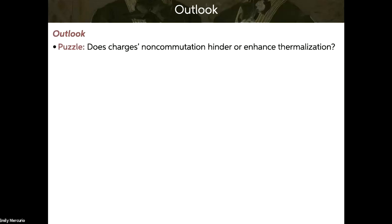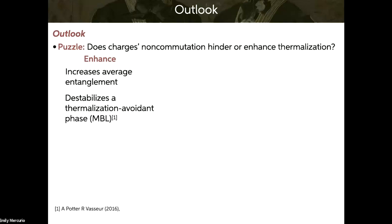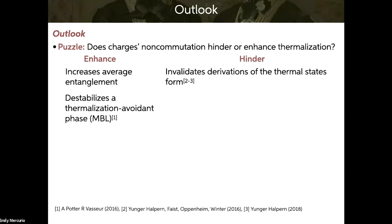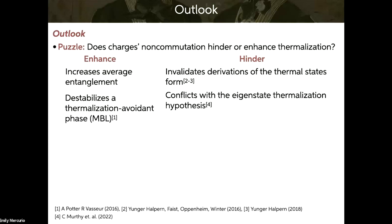The outlook. This work raises a conceptual puzzle: does charges' non-commutation hinder or enhance thermalization? One reason to think it enhances it is this work — we've increased average entanglement, and more entanglement tends to accompany thermalization. It's also been shown that non-commuting charges destabilize many-body localization (MBL), a non-thermal phase. Reasons to think it hinders thermalization: charges' non-commutation invalidates derivations of the thermal state's form, conflicts with the eigenstate thermalization hypothesis, and reduces entropy production rates.